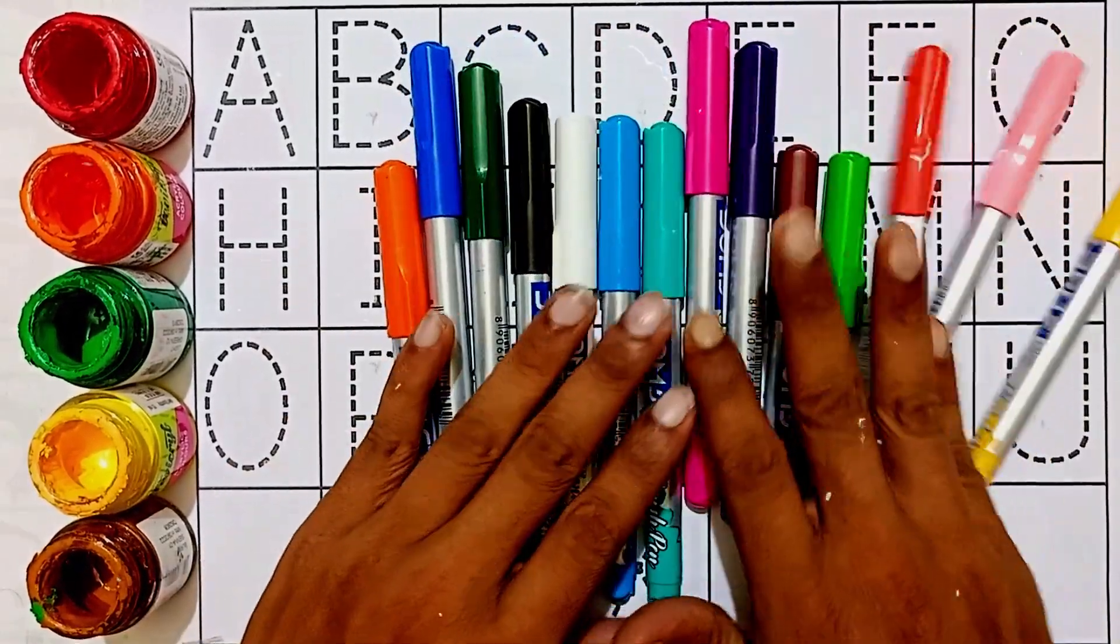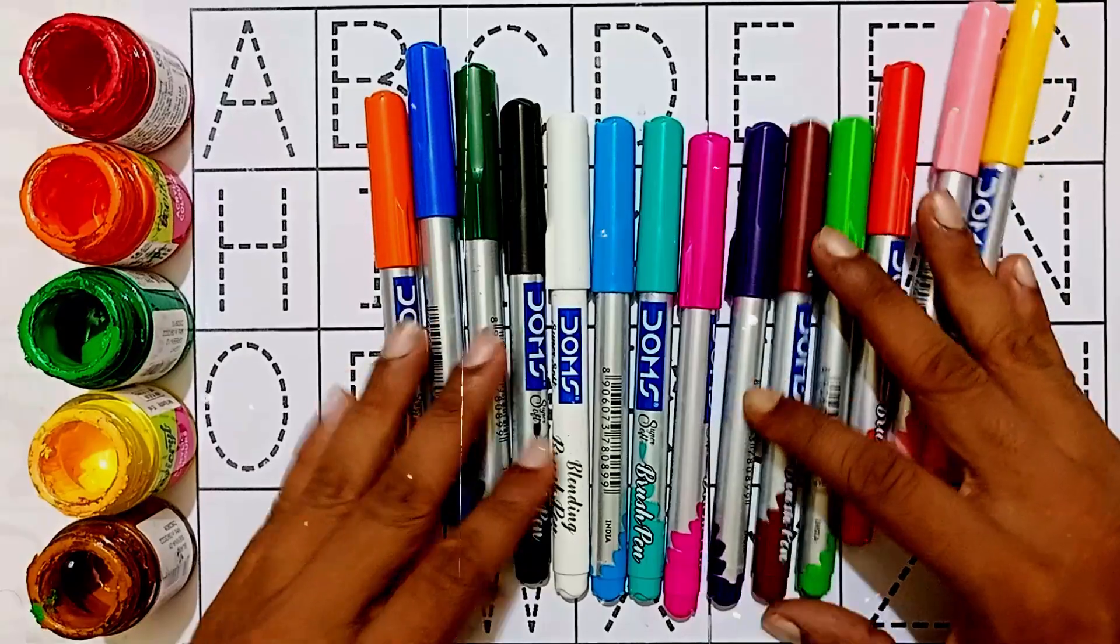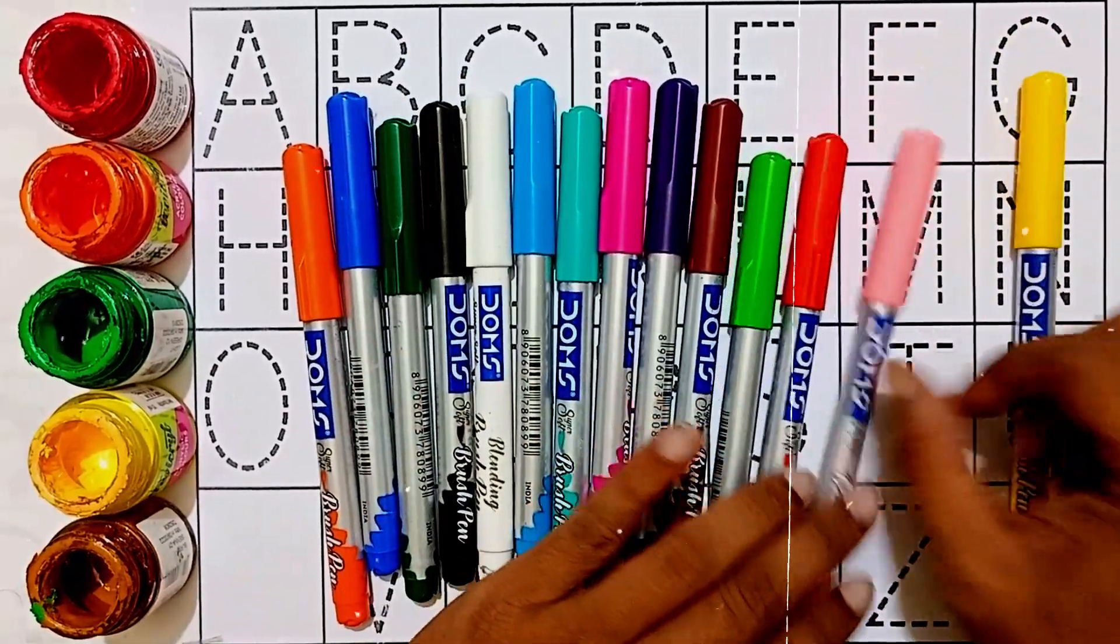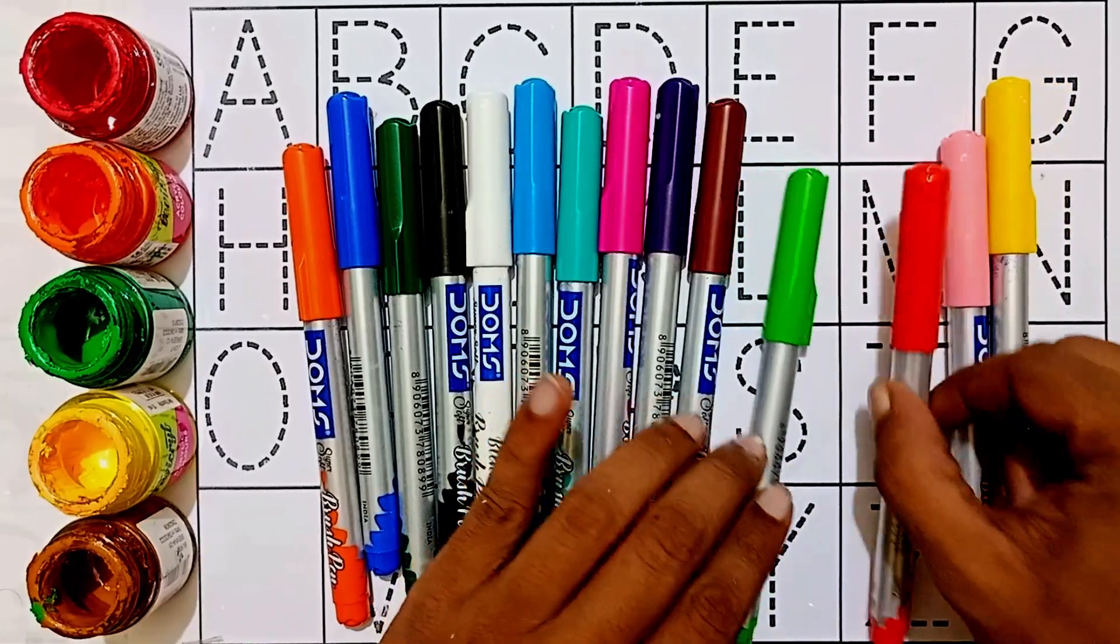Hello kids, let's learn some colors then reading and writing ABCD. Wow! Yellow, light pink, red, light green, brown, violet, pink, sea green, sky blue, white, black, and green.